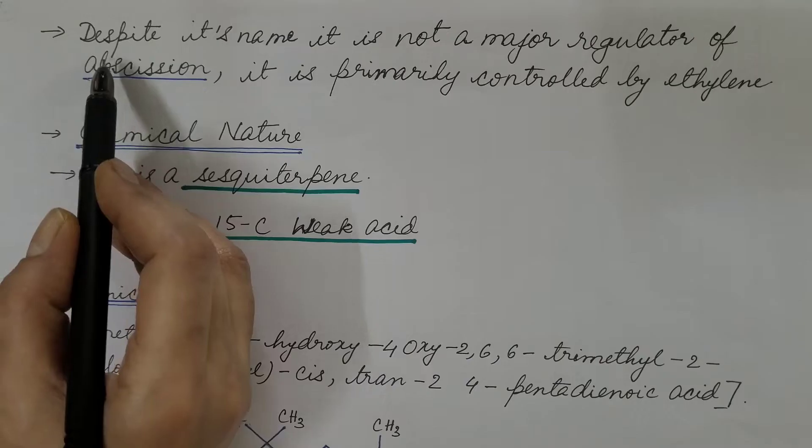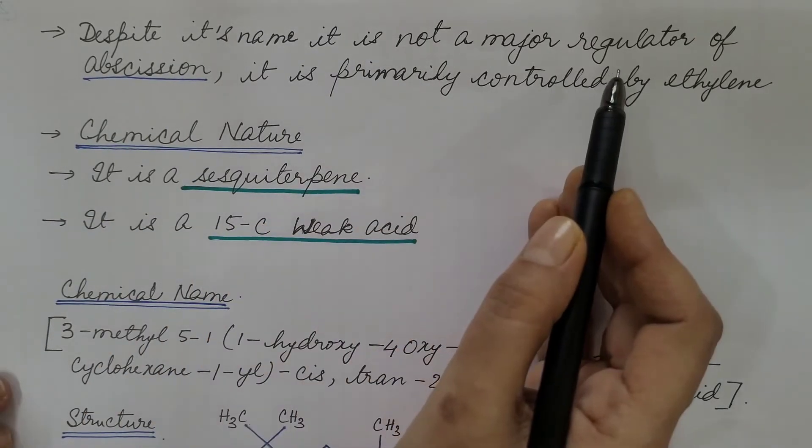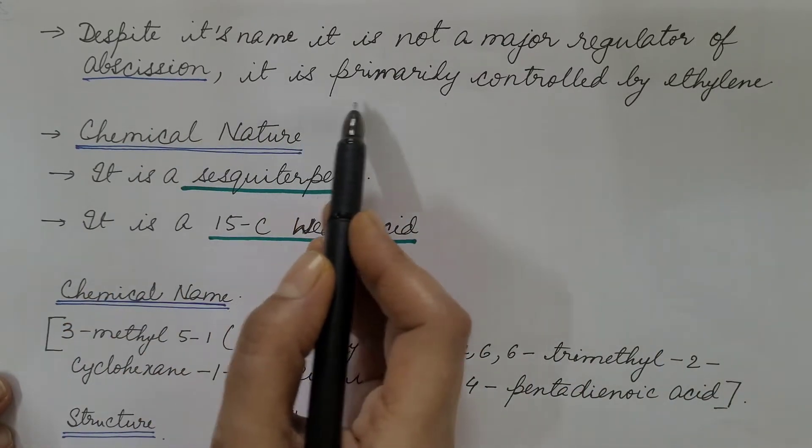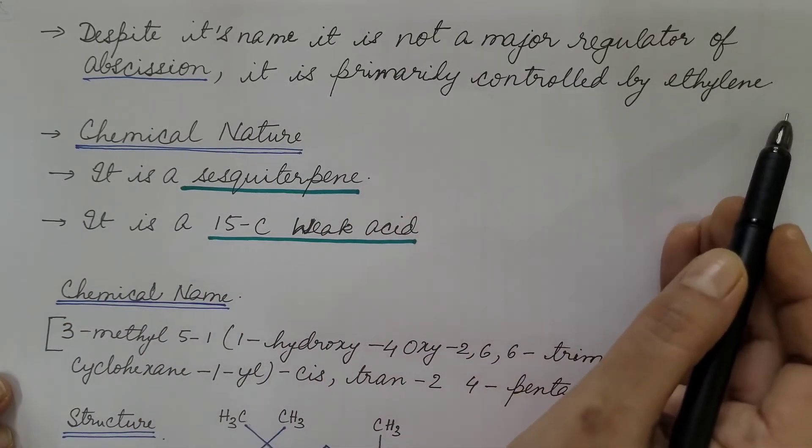Despite its name, it is not the major regulator of abscission. That is primarily controlled by ethylene.